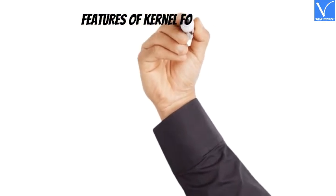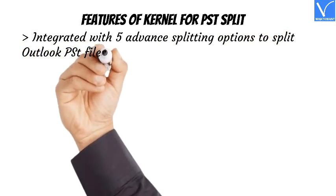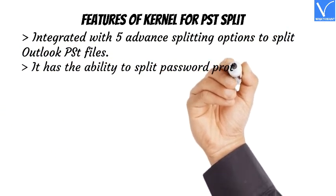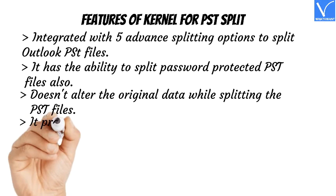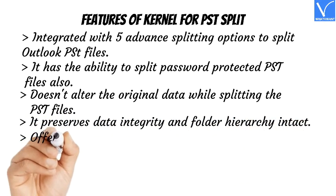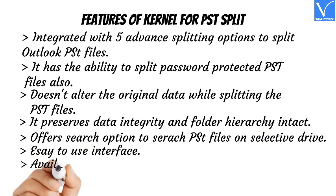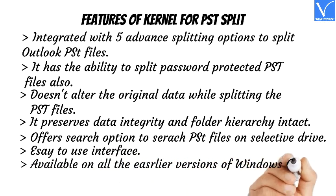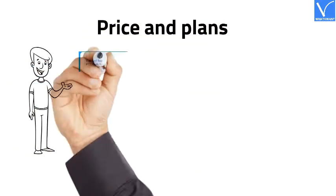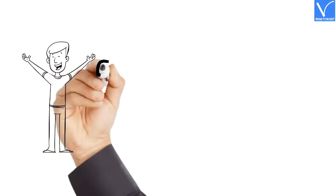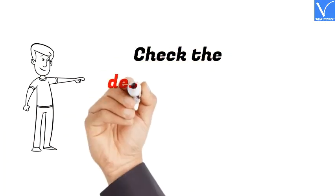Features of Kernel for PST Split: integrated with five advanced splitting options to split Outlook PST files; ability to split password-protected PST files; doesn't alter the original data while splitting; preserves data integrity and folder hierarchy intact; offers a search option to search PST files on a selective drive; easy-to-use interface; available on all earlier versions of Windows OS and MS Outlook including Office 365. Our viewers get a special discount on all Kernel for PST Split licenses. Product and discount links are provided in the description.